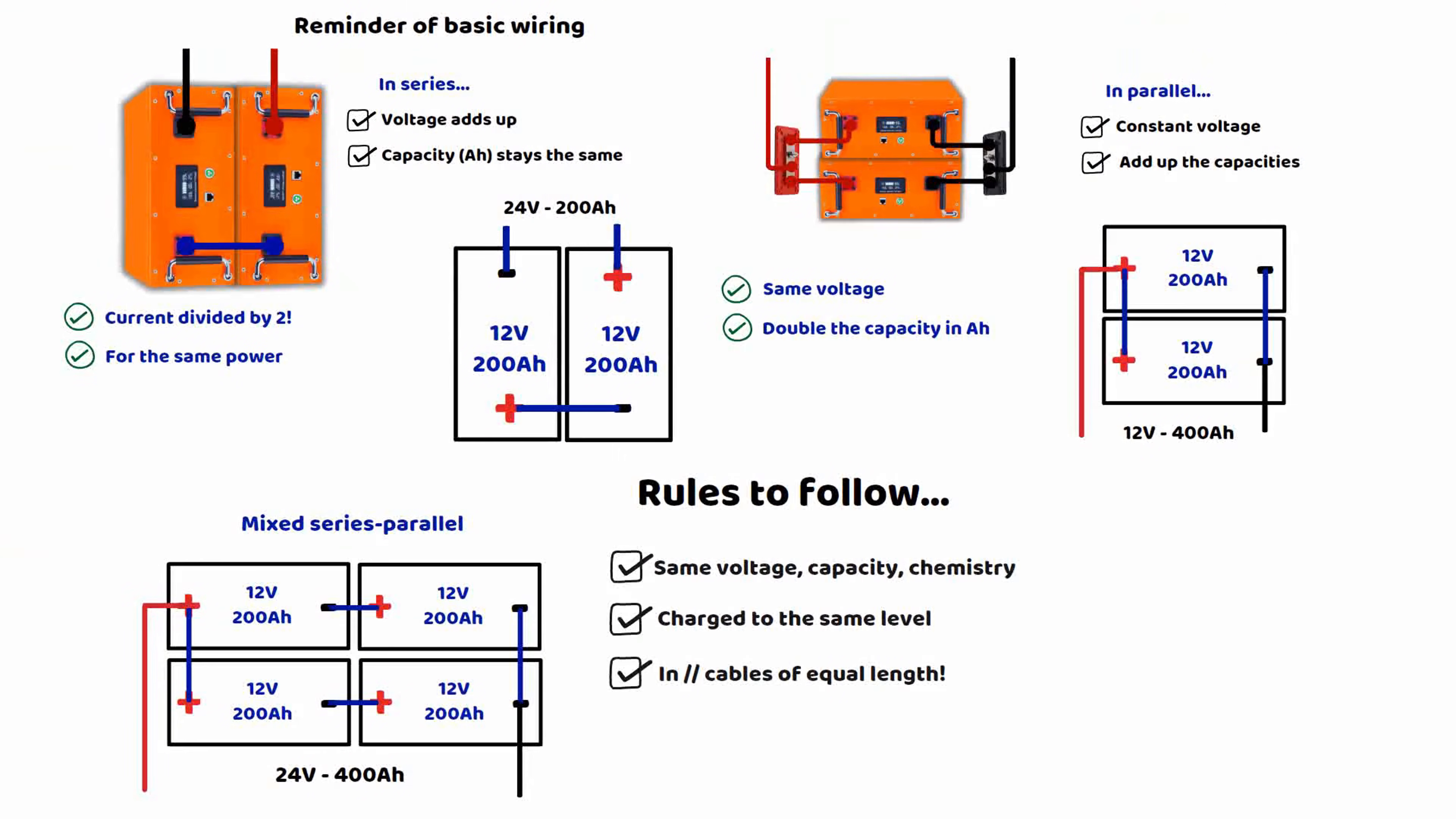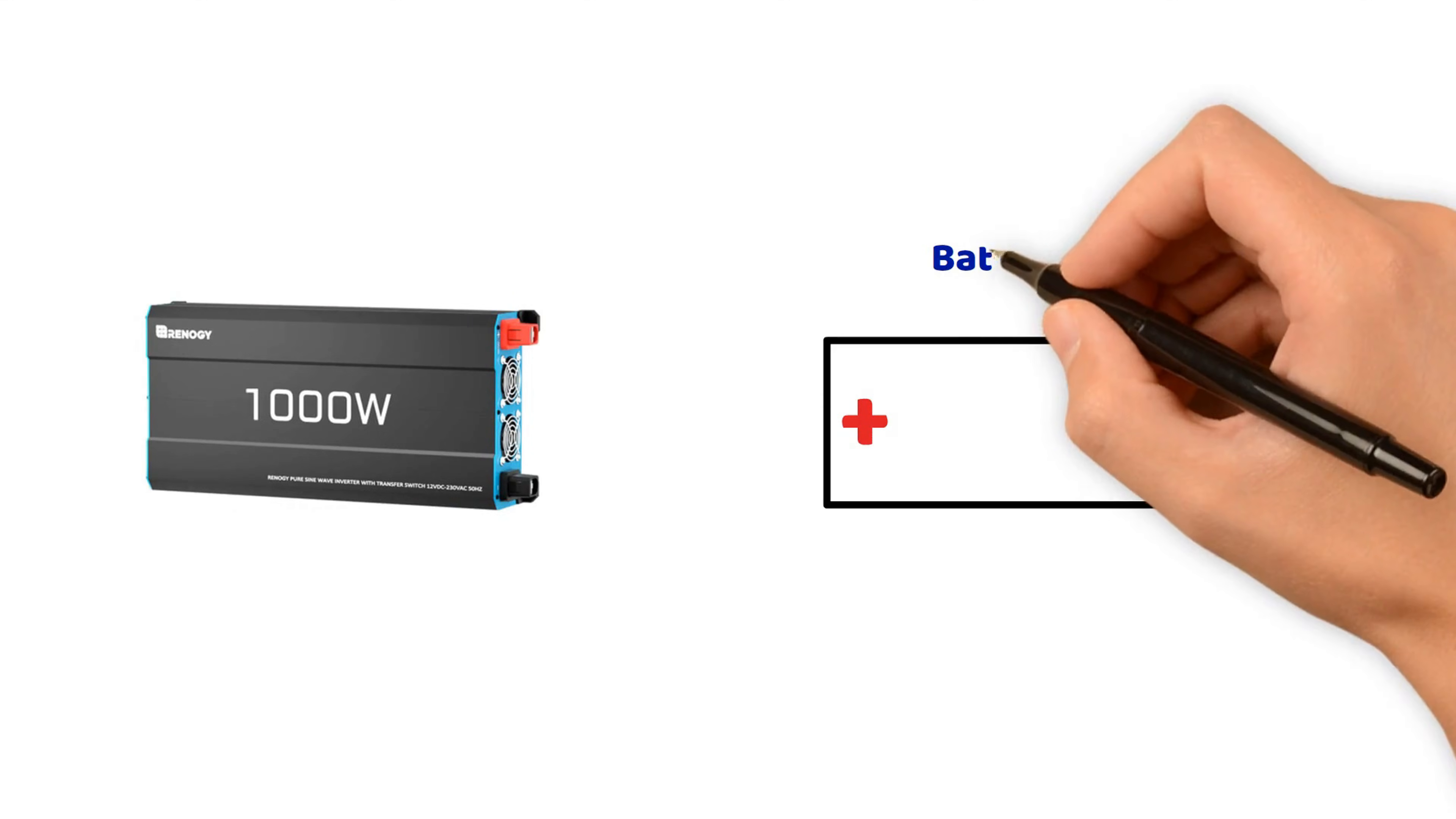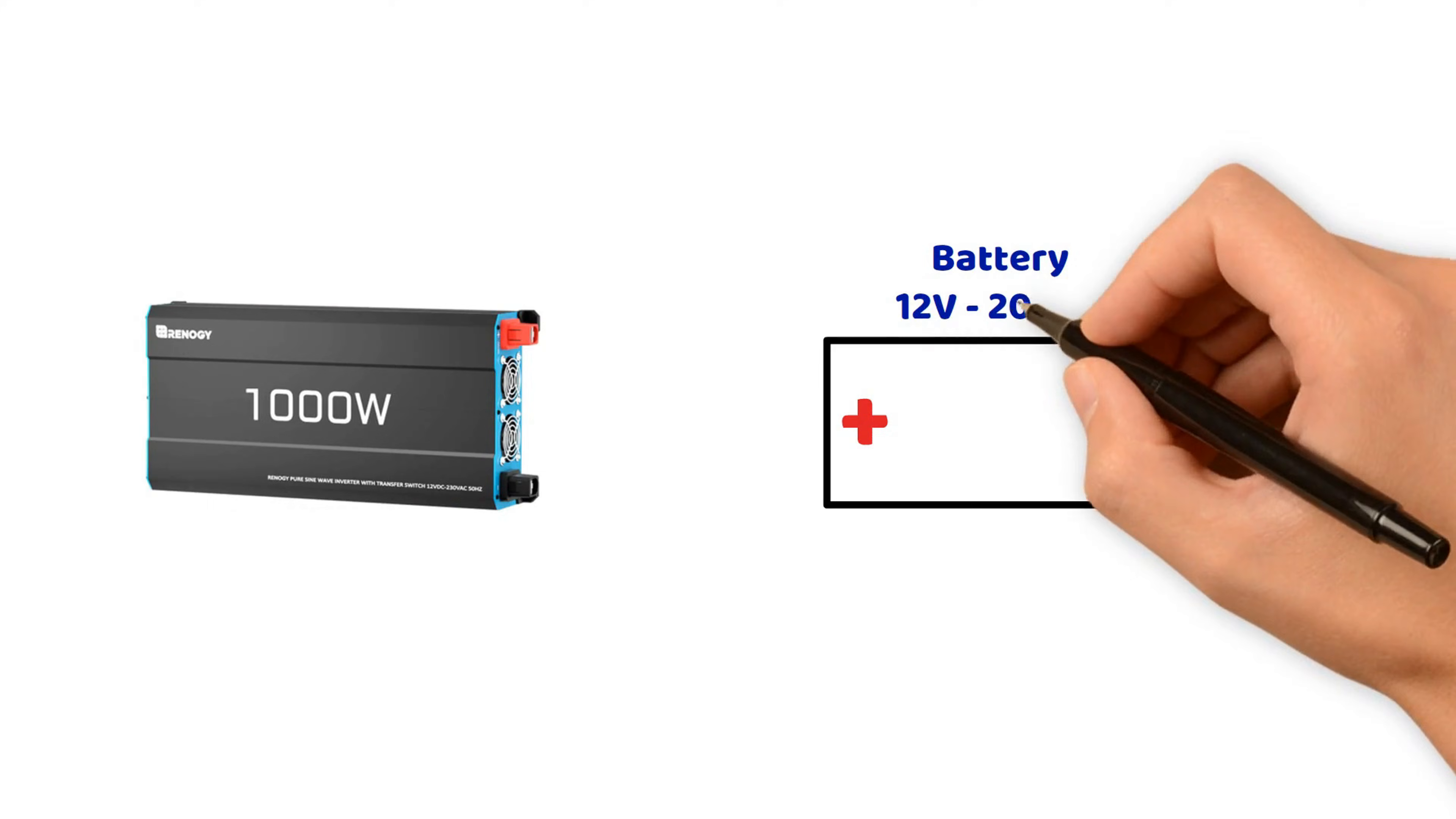Let's take a first case study with a 1000 watt inverter running on 12 volts, connected to a 12 volt 200 ampere hour battery. And in the second case study, we will connect them in series. You will see, it is very interesting. So let's start with the lead acid AGM or gel battery to clearly understand the difference compared to lithium.